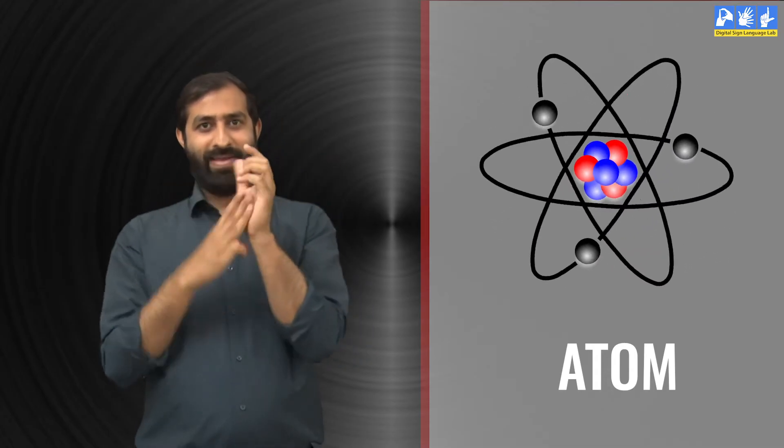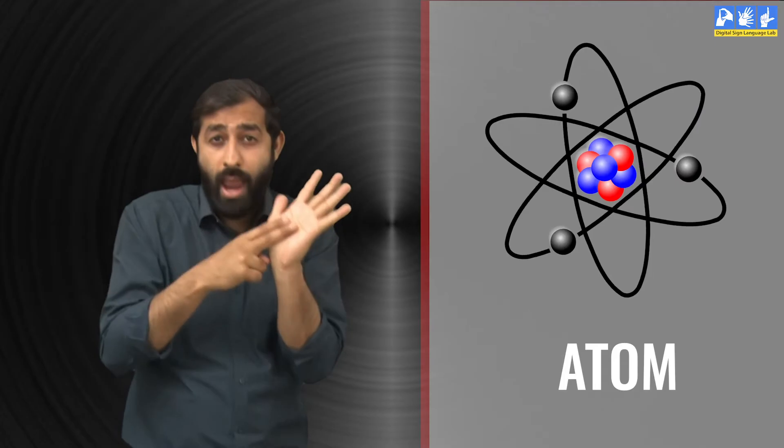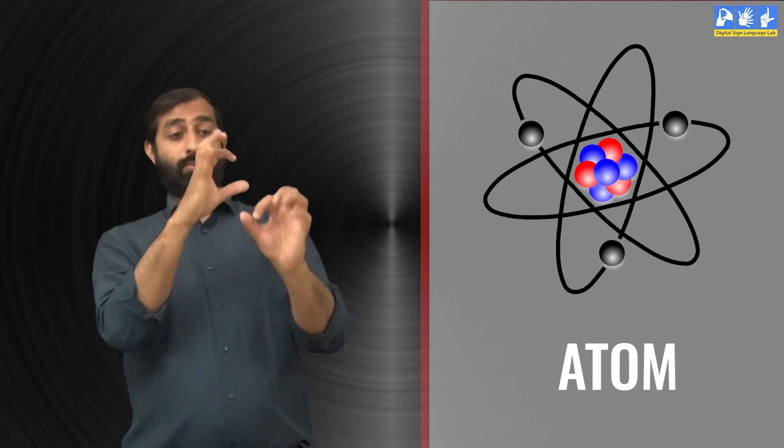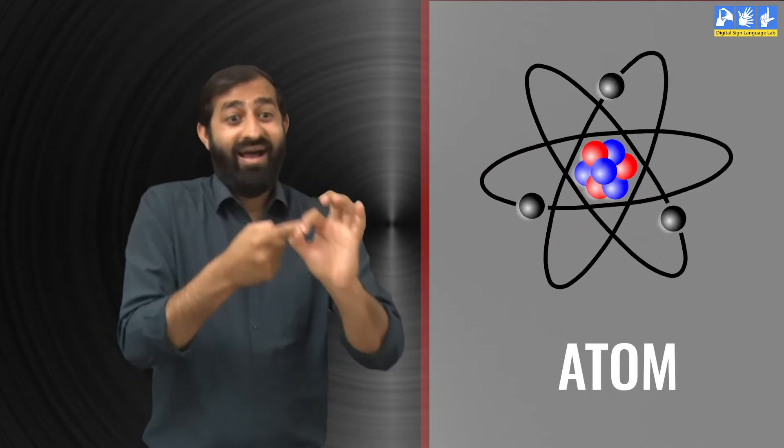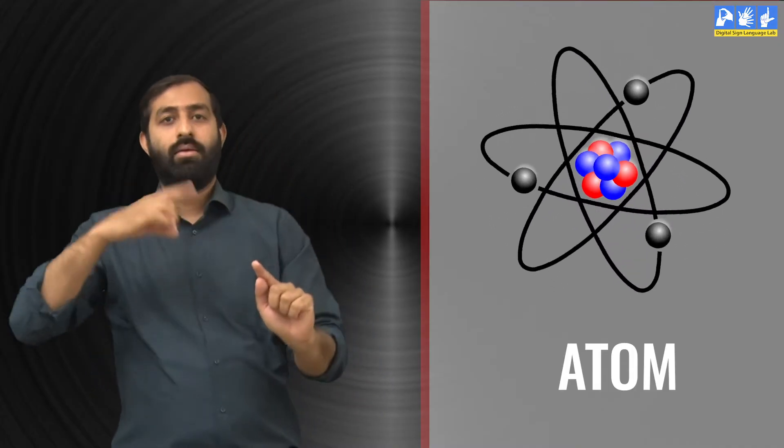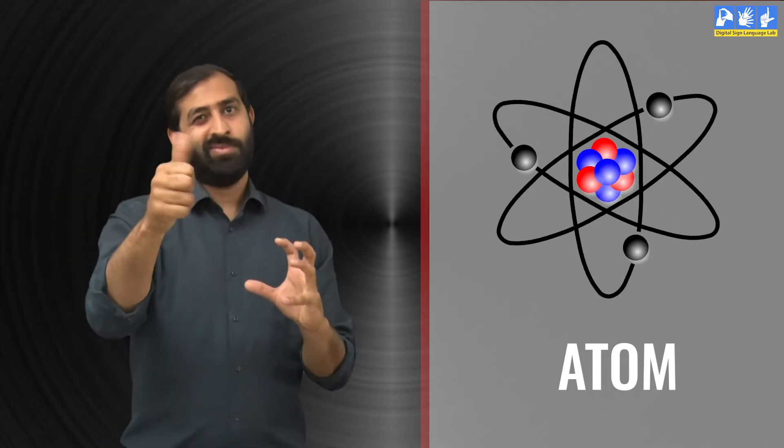So earlier we discussed that atoms are composed of three particles: protons, neutrons and electrons. So an atom is made up of these particles. And atoms join together to make molecules. And all the objects around us are made up of molecules. It is a chemical element which is not visible.